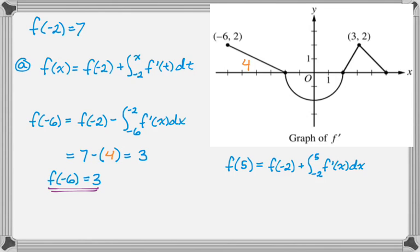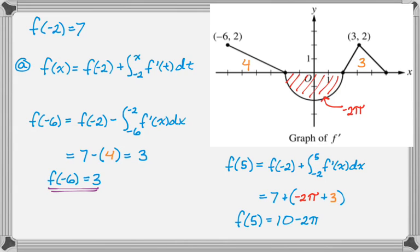Also it's below the x-axis, so this region here gives me negative 2π. And then I have another triangle that has a base of 3 and a height of 2, which means I pick up 3 in my area there. So this is going to be 7 plus negative 2π and plus 3. So f of 5 is 10 minus 2π. You want to keep those values in mind because we're actually going to need them later on.